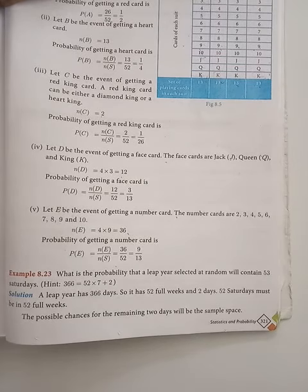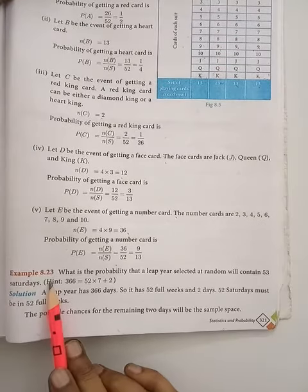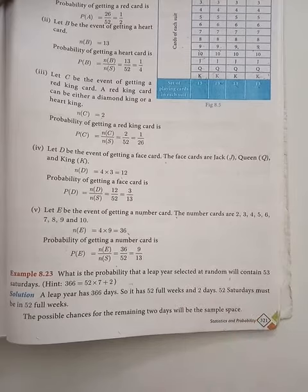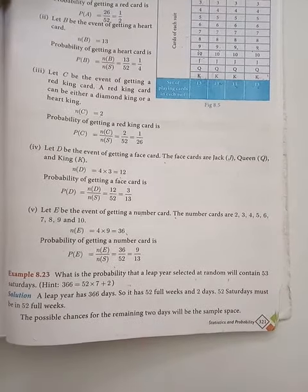Hello students, this is Indhrani Mathematics. Ipna chapter number 8, Statistics and Probability ila example 8.23 pakla. What is the probability that a leap year selected at random will contain 53 Saturdays? 53 Saturdays, leap year ila irukkir kuna na probability kakiranga.